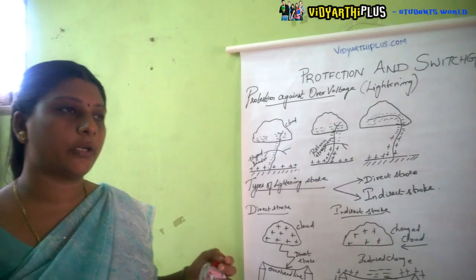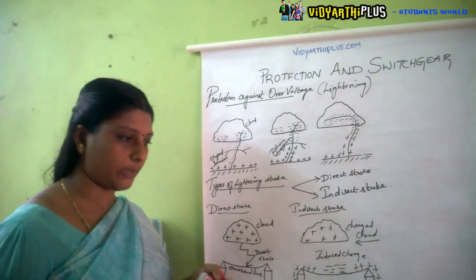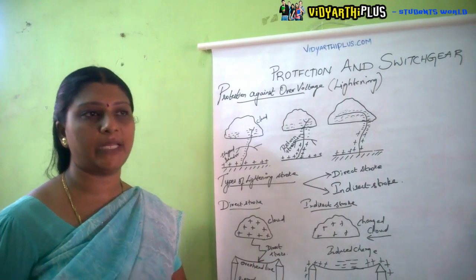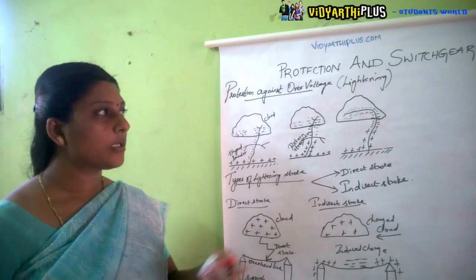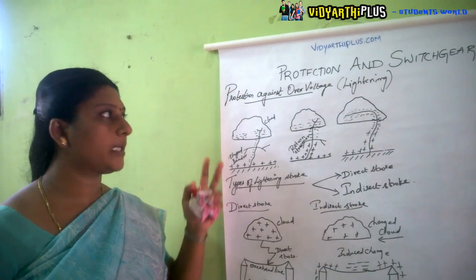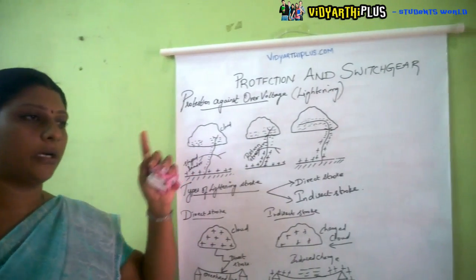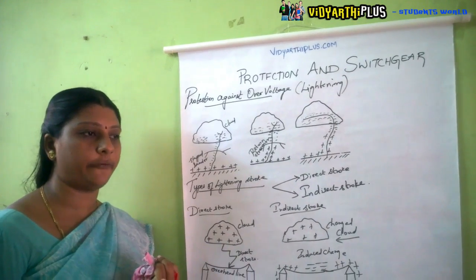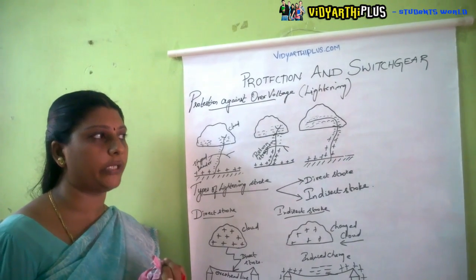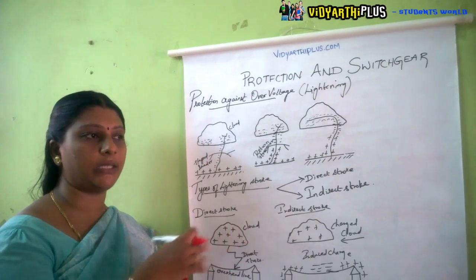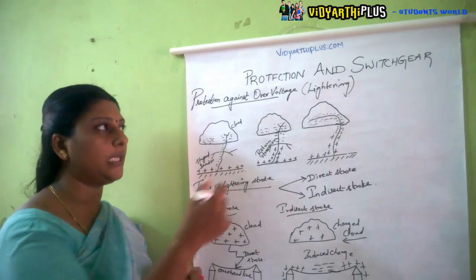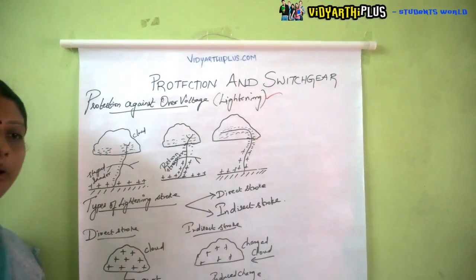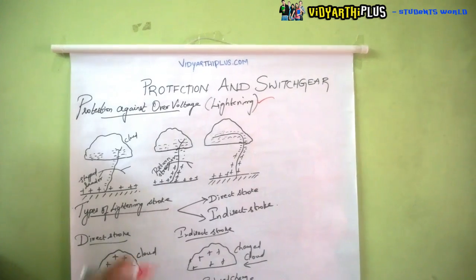Some of the equipment may be placed indoors and some outdoors. When placed outdoors, there are two types of overvoltages: one due to lightning, and the other internally due to switching surges.